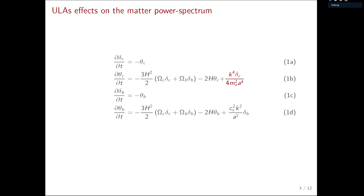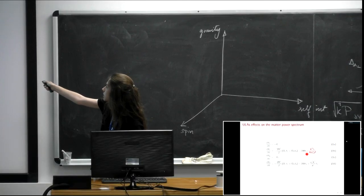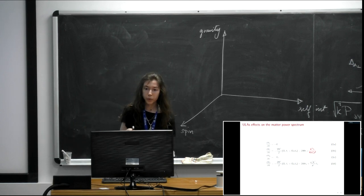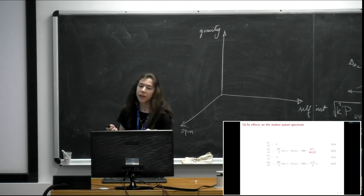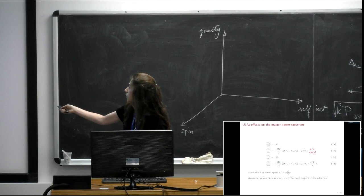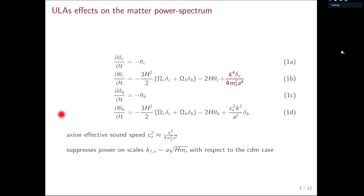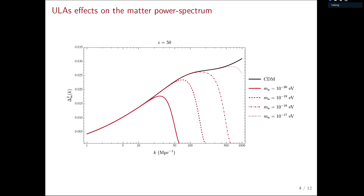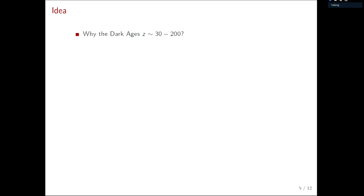The equations look exactly like cold dark matter equations except for an additional term arising from the quantum pressure of the ultralight field, acting as an effective sound speed. This completely washes out power on scales larger than the Jeans length of the particle. The lightest particles wash out more power. It is convenient to probe this suppression during the dark ages, where things remain linear on small scales with no astrophysical complications, and the powerful near-future probe will be 21 cm line intensity mapping.